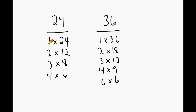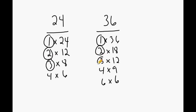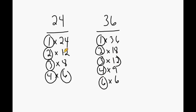Now let's identify all of the common factors. As we said before, 1 is a common factor of all numbers. Because 24 and 36 are both even numbers, 2 is a common factor as well. 3 is also a common factor. 4 is another common factor. We also have 6 as a common factor. And the last factor, which is the biggest common factor of both numbers, is 12. So the greatest common factor, or GCF, of 24 and 36 is equal to 12.